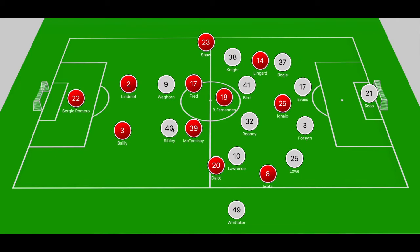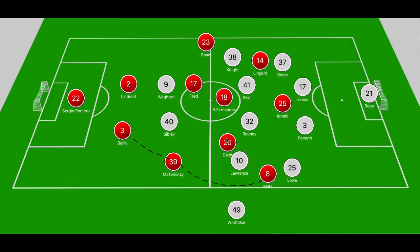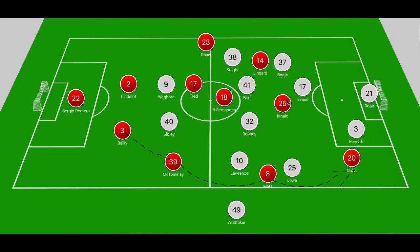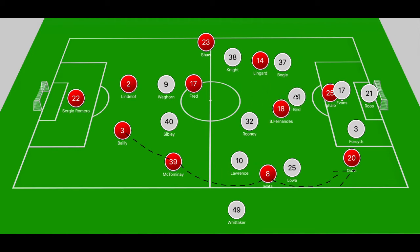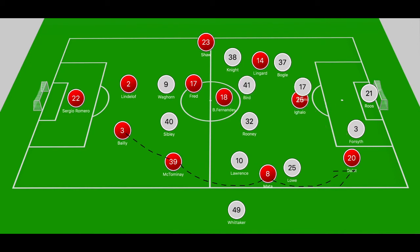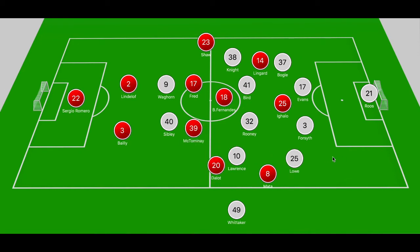In another example, McTominay dropped off into the right channel to receive from Bailly, then slid the ball across Lawrence into Mata's path on the touchline. Mata wrapped the ball around Lowe again, finding Deleu making an underlapping run in between Forsyth and Lowe. When Deleu received in that right channel, Forsyth came across to close him down, but Deleu pulled the ball back for Fernandes running off Bird — though his shot at the edge of the box was blocked. These examples show players running in behind Lowe, midfield runners like Fernandes cutting across Rooney and Bird, and Mata shifting wide as a creative fulcrum.